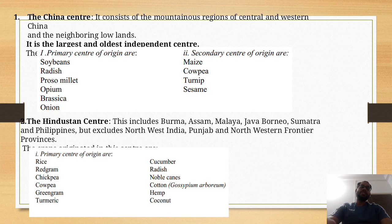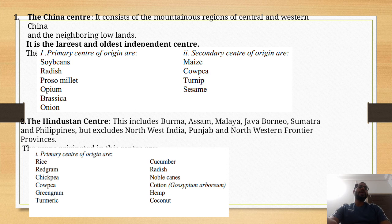These are the crops that come under the Hindustan center of origin, which is the primary center of origin: rice, red gram, chickpea, cowpea, green gram, and turmeric. These crops originate from the Hindustan center of origin.